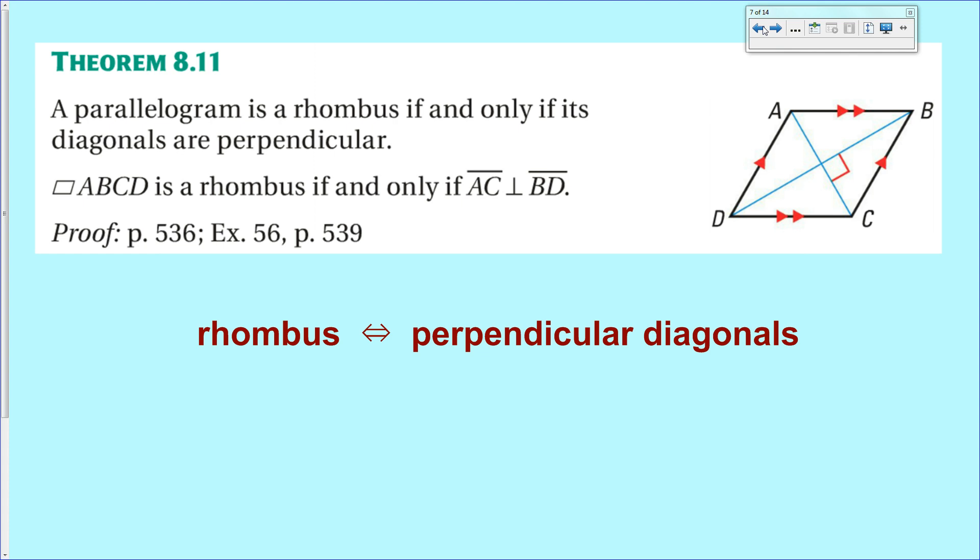Next up, we have yet more theorems. We're going to have three more theorems, and they're all going to be if and only if theorems. So you can use them both in the forward conditional manner and the reverse converse manner. First one is, if you have a parallelogram that is a rhombus, then its diagonals are perpendicular. So a rhombus has perpendicular diagonals both ways.